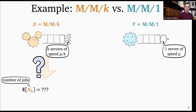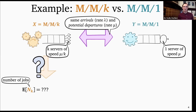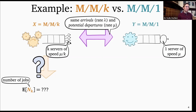The way we give the same random input to both systems is by giving them the same arrival process and the same potential departure process. The arrival process is a Poisson process of rate lambda. A potential departure process is a process of rate mu, and whenever a potential departure occurs in the M/M/1, a departure occurs if there are any jobs. In the M/M/K, a departure occurs with probability proportional to the fraction of busy servers. For example, if only one server is busy and a potential departure occurs, we have a departure with probability one over K, which gives exactly the right dynamics for the M/M/K.